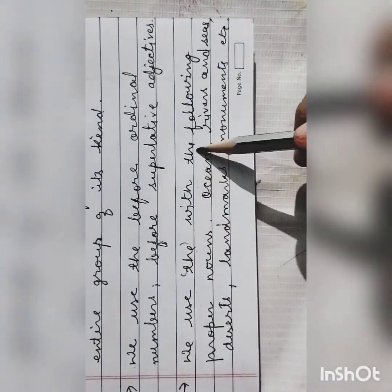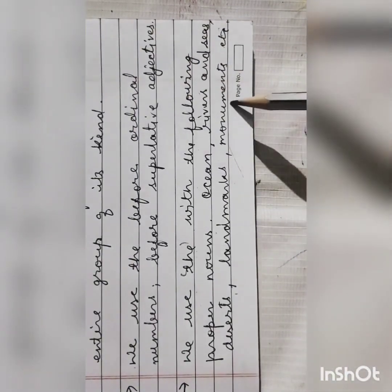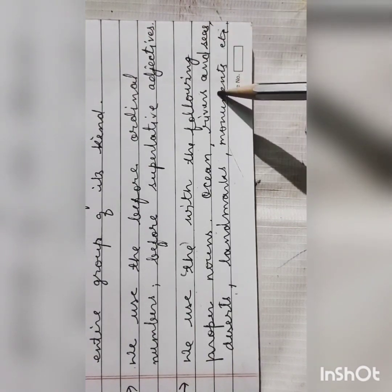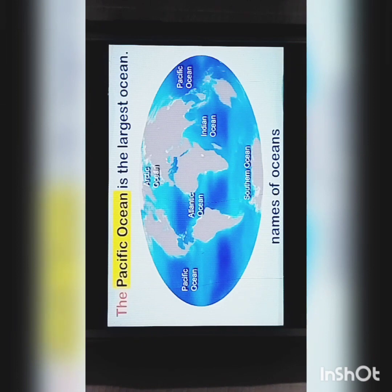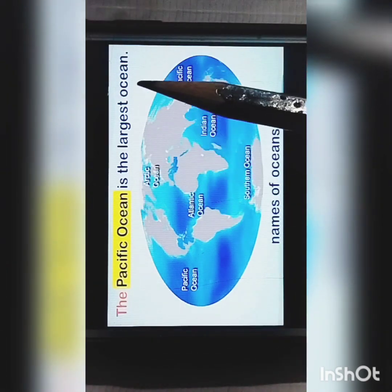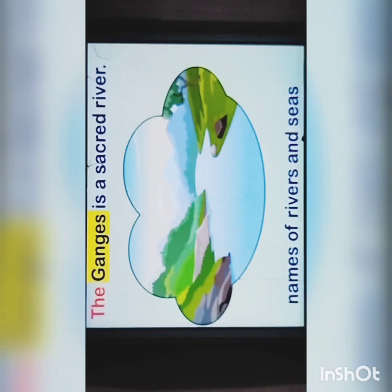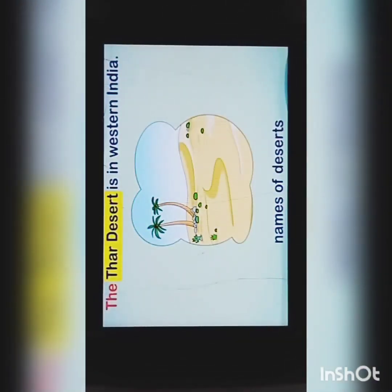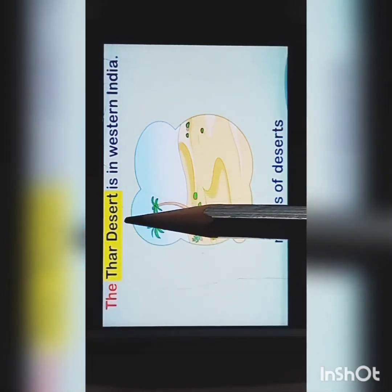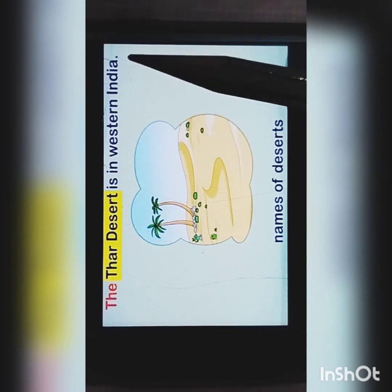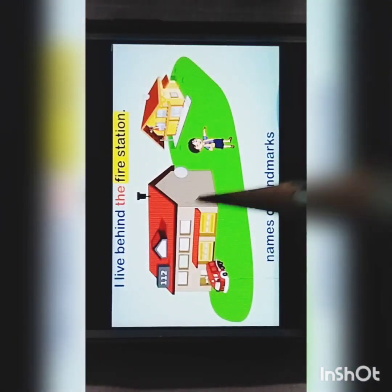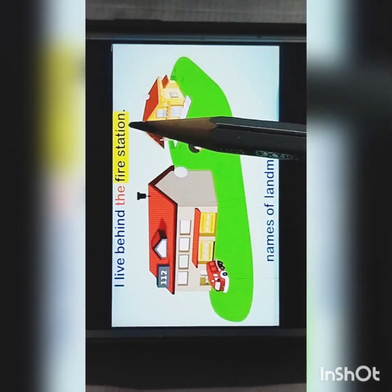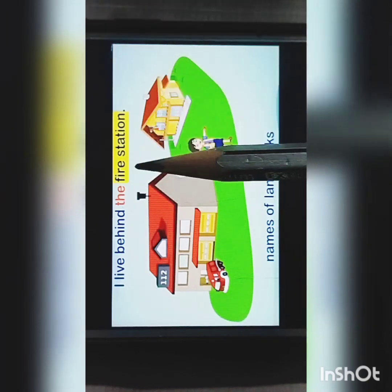We use the with the following proper nouns: ocean, river, sand trees, deserts, landmarks, monuments, etc. For example, names of oceans: the Pacific is the largest ocean. Names of rivers and seas: the Ganges is a sacred river. Names of deserts: the Thar desert is in western India. Names of landmarks: I live behind the fire station — here we use the before the name of the landmark.